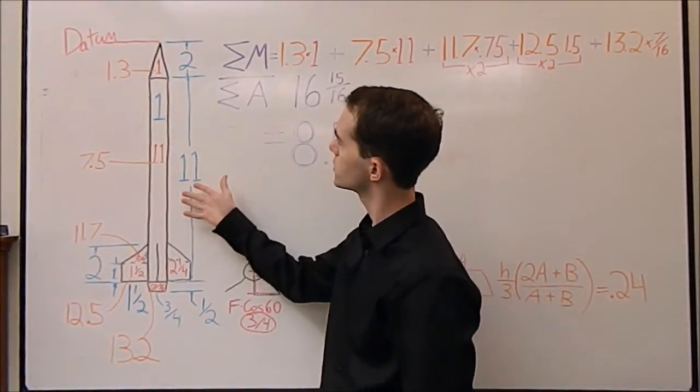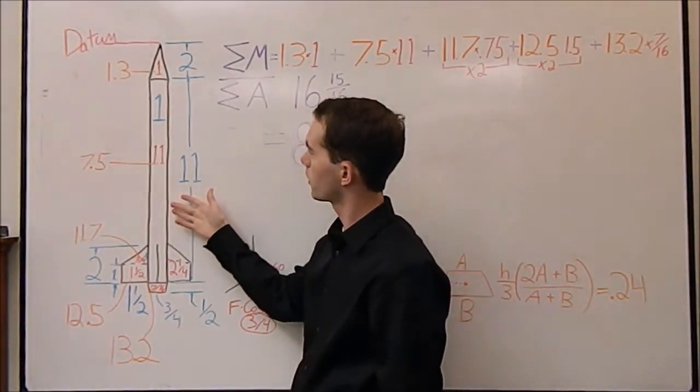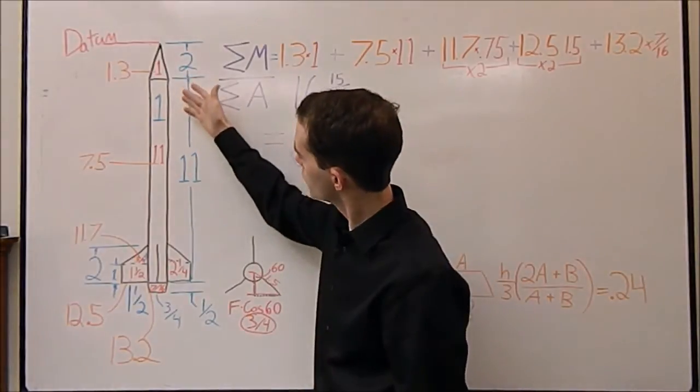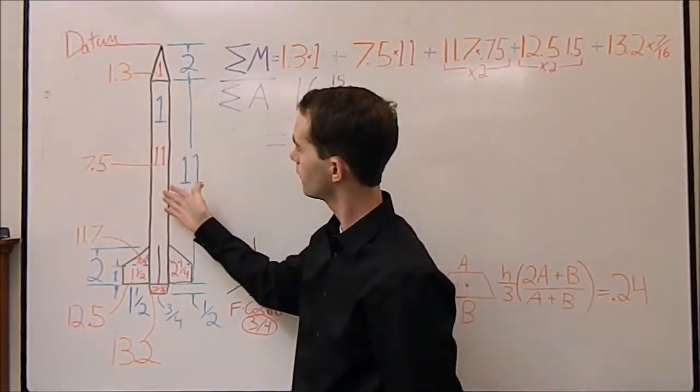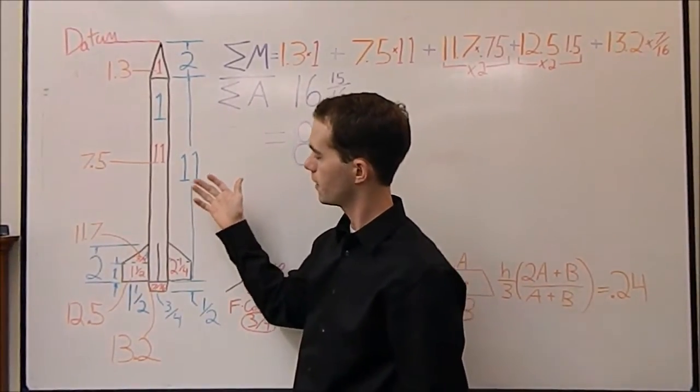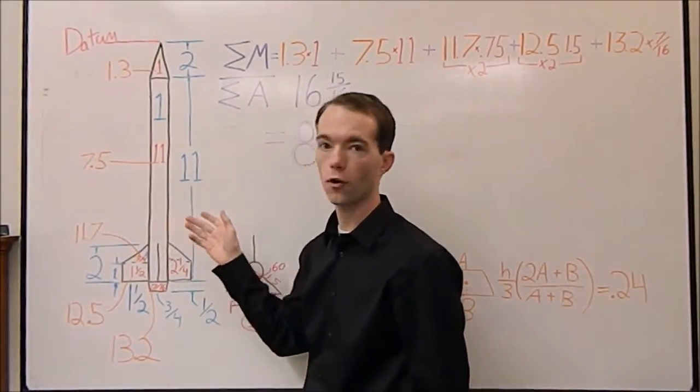So I've got here a 2 to 1 scale drawing of a model rocket. You can see here I've got all the dimensions. All the linear dimensions are in blue, all of the areas are in red, and distances are in orange.